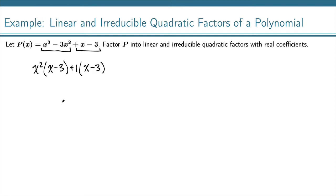And now I've got this common factor of x minus 3, so I can pull that out. x minus 3. And we are left with this x squared and this plus 1, so x squared plus 1.